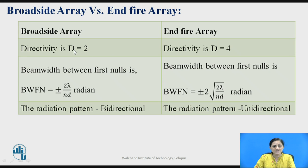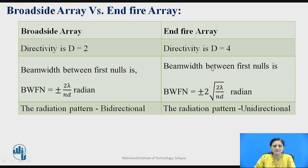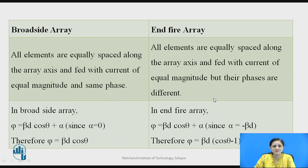In broadside array, the directivity value equals 2; in end fire array it equals 4. The beam between the first nulls is given by the equation ±2λ/(nd) radians for broadside array. In end fire array it is given by ±2√(2λ/(nd)), where lambda is the wavelength, n is the number of elements, and d is the spacing between each element. The radiation pattern in broadside array is bidirectional, whereas in end fire array the radiation pattern is unidirectional.